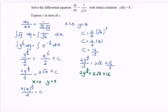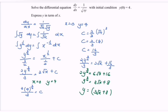Dividing by 2, we get y to the power of 3/2 equals 3 square root of x plus 8. Finally, y equals 3 times the square root of x plus 8, all raised to the power of 2/3.